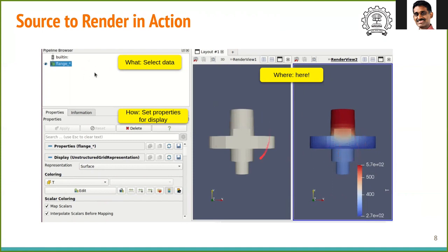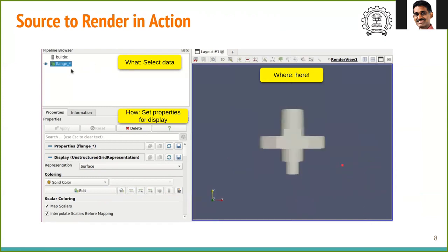The first viewport displays the geometry and the second one displays the surface temperature. Note that the color represents the temperature range from 270 to 570. To summarize, we have what, how and where.